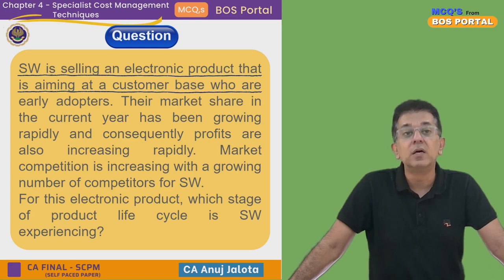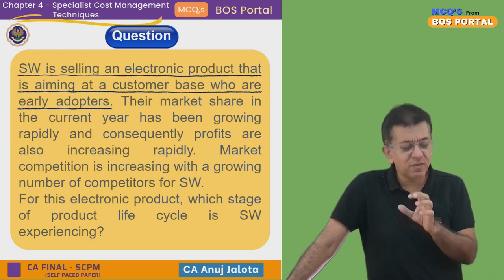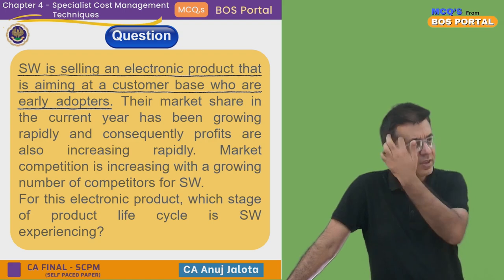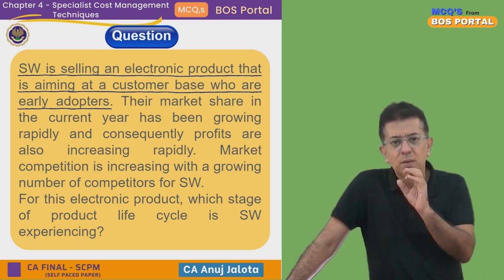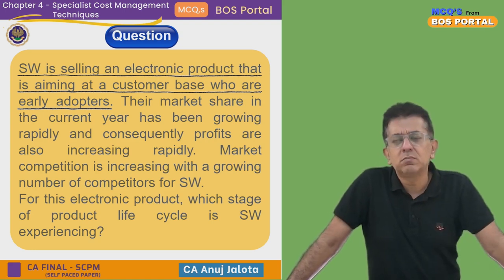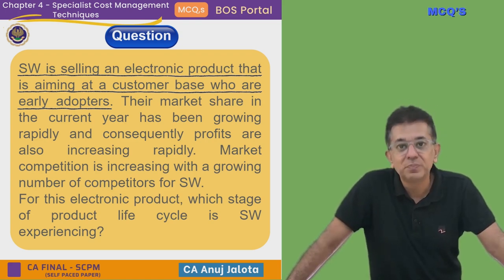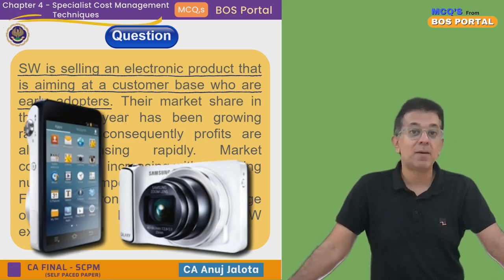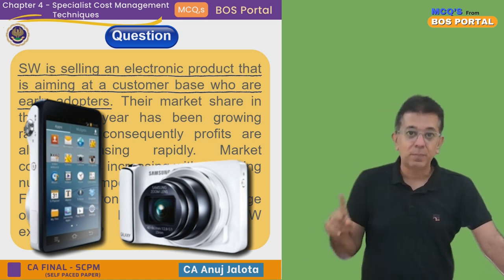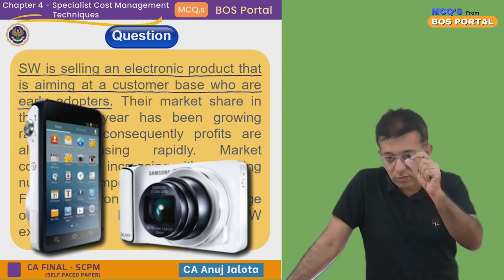Early adopters are people who try out a new product whether it is successful in future or not — they just want to try it. For example, Samsung once launched a Galaxy Camera — not a phone, a camera. You won't hear about that camera today, but at the time it came out, I bought it. So I am an early adopter.